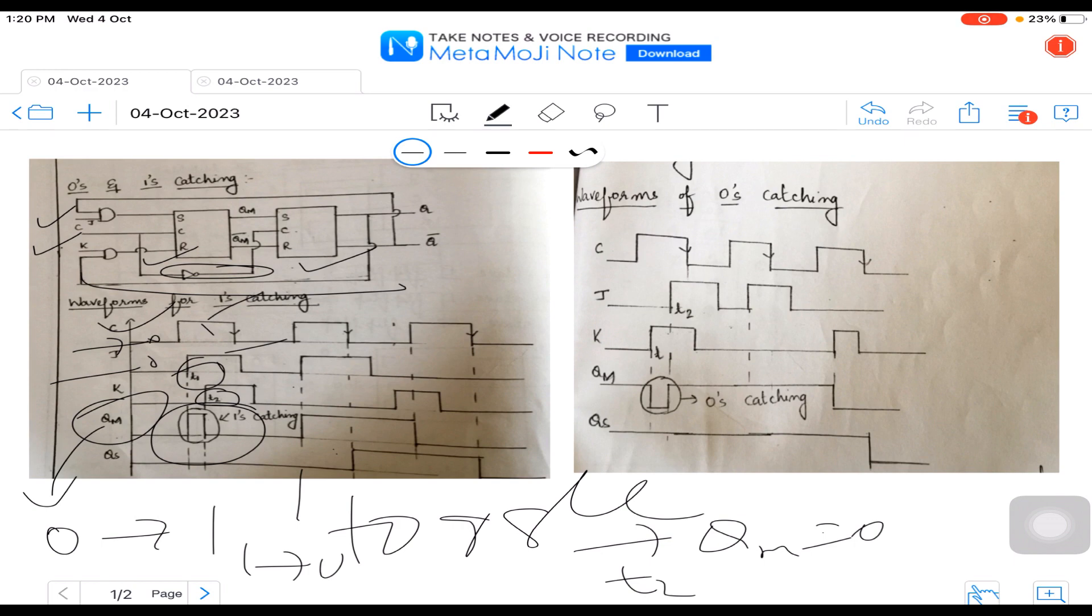Similarly with respect to 0 sketching, let us see the waveform of 0 sketching here. In this case again, initially when K equals 1, QM sets to be 0. You can observe here it is set to be 0, and at time T2 here, when the same condition J equals K equals 1 and the clock is 1, again the output toggles.